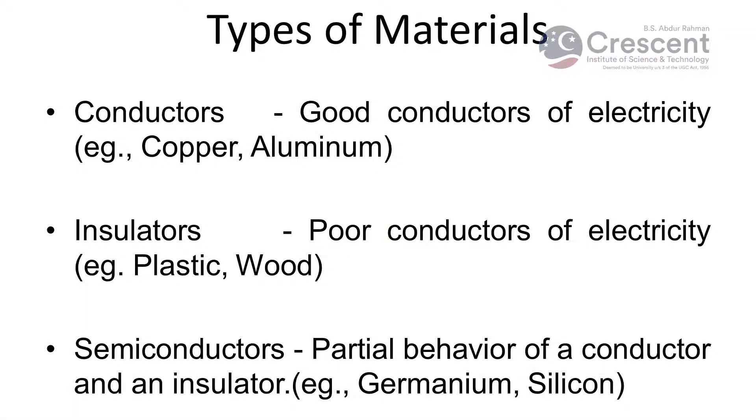Good morning everybody. Today I am going to give a discussion on semiconductors. Before going to the semiconductor discussion, let me give an introduction to materials. There are three important types of materials: conductors, insulators, and semiconductors. Conductors are the ones which can conduct electricity very well; the best example is copper. Insulators are poor conductors of electricity; the examples are wood and plastic.